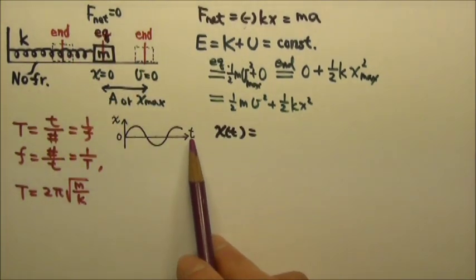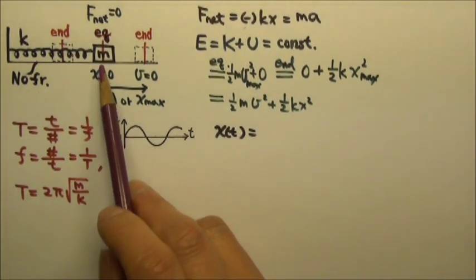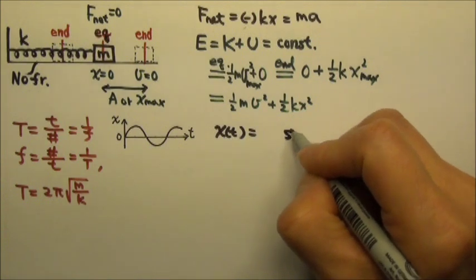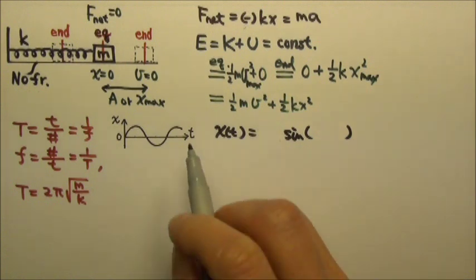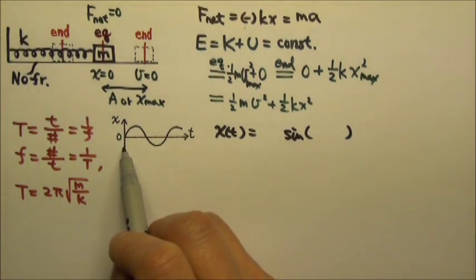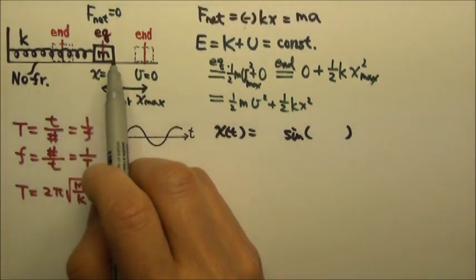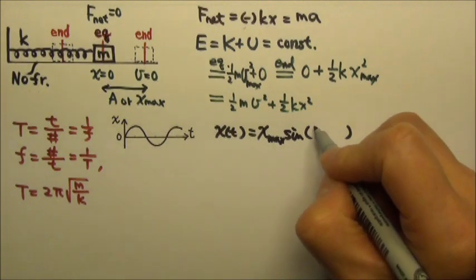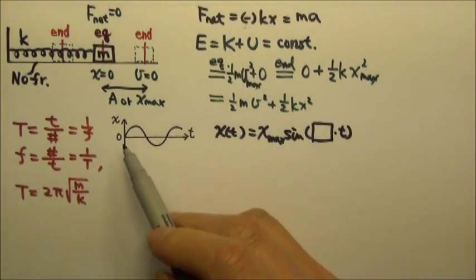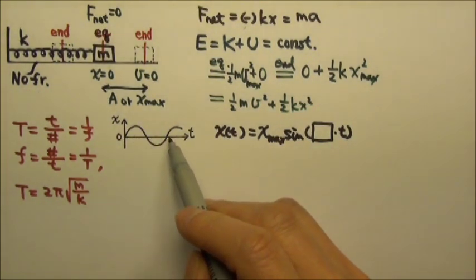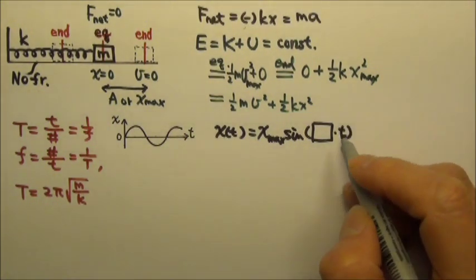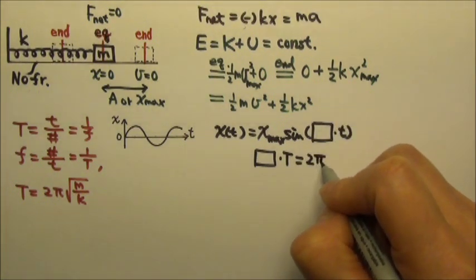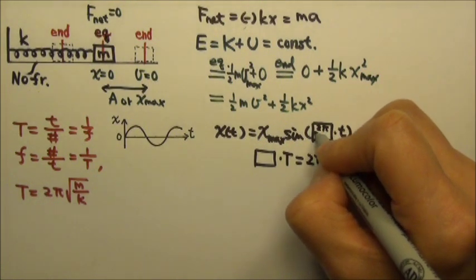During the oscillation, the position as a function of time has a sine or cosine shape. If we start timing at the equilibrium position, it is a sine function. The sine oscillates between 1 and negative 1, but the position oscillates between negative amplitude and positive amplitude, so the amplitude goes in front. What goes inside the sine is something times t — since the sine completes one cycle over an angle of 2π, when t equals one period the angle must equal 2π, so the coefficient is 2π divided by the period.